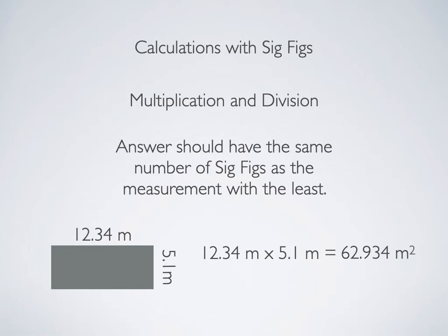My answer can only have 2 significant digits. I'm going to count them off 1, 2, and then I'm going to use that 9 to tell me I need to round up. So the best we can know the area, given the uncertainty in our length and width measurements, is 63 meters squared.